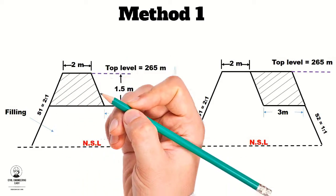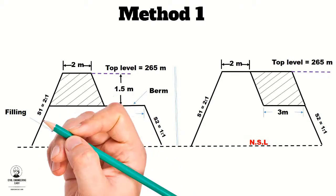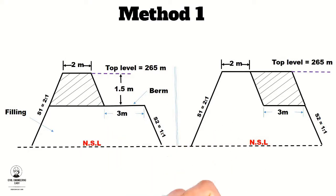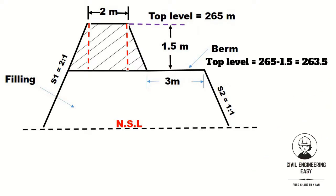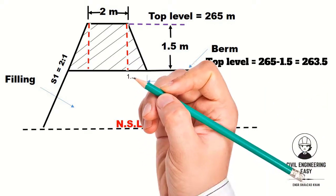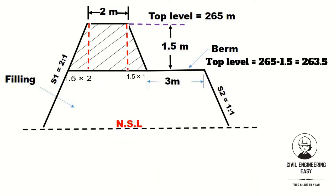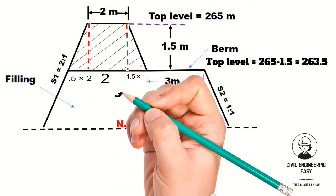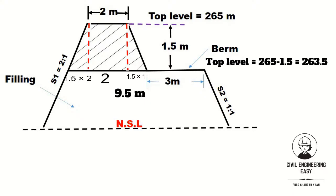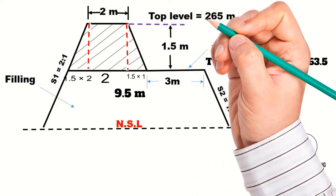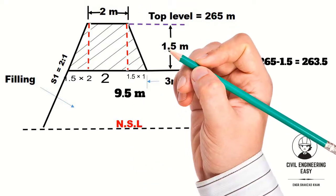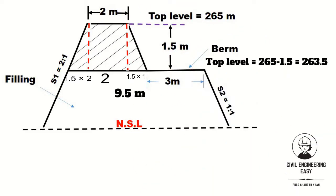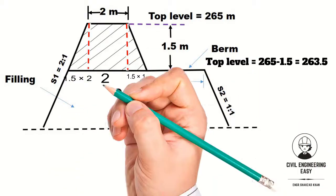In the first method, the lower portion of the bank will be treated as a usual embankment at level 265 minus 1.5, which equals 263.5, and its top width will be 3 plus 1.5×1 plus 1.5×2 plus 2, equal to 9.5 meters. For the upper portion, the top level is 265 meters with a top width of 2 meters and a constant depth of 1.5 meters. Then both quantities will be added.